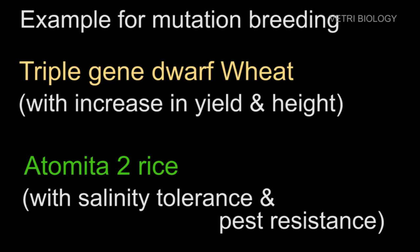Using radiation and chemicals to produce a new variety of plants is called mutation breeding. For example, triple gene dwarf wheat with increased height and yield, and Atomita 2 rice with salinity tolerance and pest resistance.